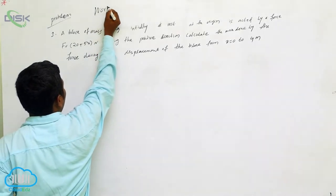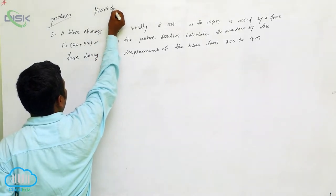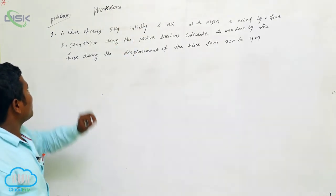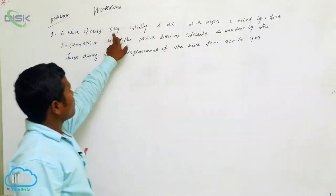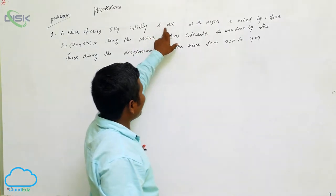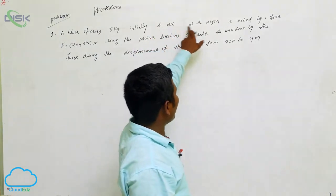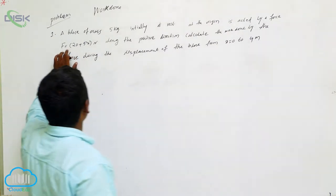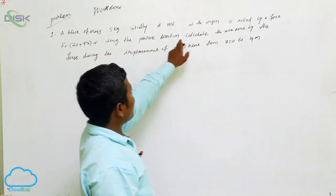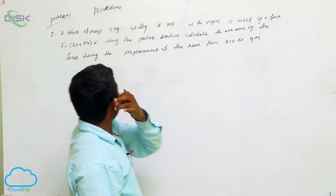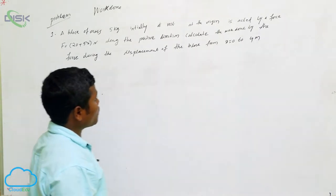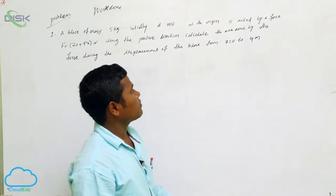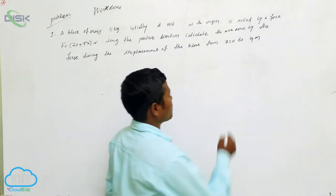What is the problem? A block of mass 5 kg, initially at rest at the origin, is acted upon by a force F equal to some value along the positive direction. Calculate the work done by the force during the displacement of the block from x = 0 to x = 4 meters.